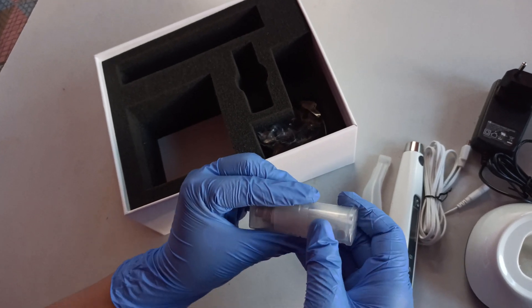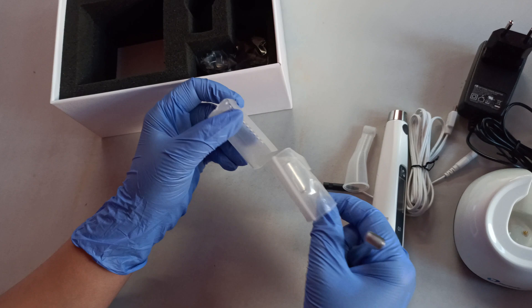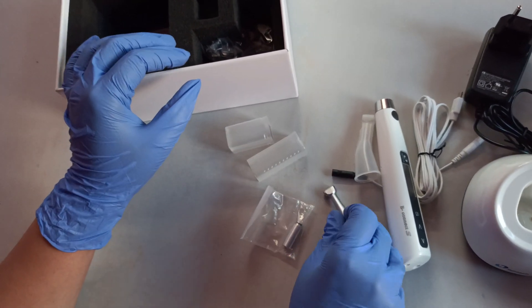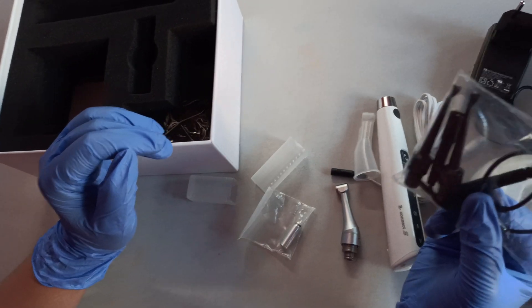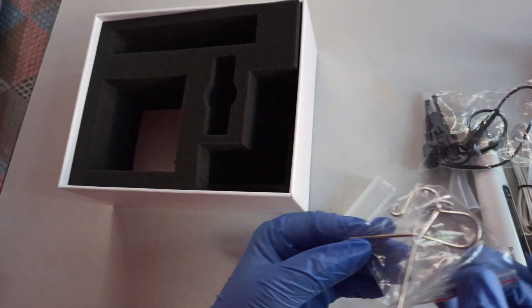Here is the counter angle handpiece which attaches to the motor handpiece. It also comes with an oil spray nozzle, as you can see, and two file clips and two lip hooks.